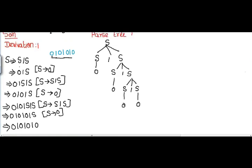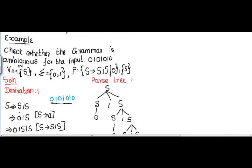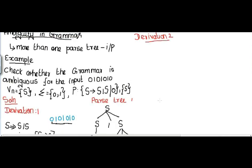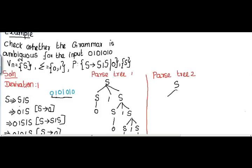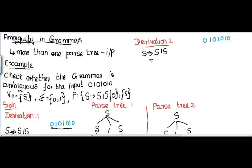Now let me try derivation 2 using a different method, drawing its corresponding parse tree alongside. The input for this grammar is 0 1 0 1 0 1 0. I start with S. If I substitute S → 0, I cannot proceed further, so I use S → S1S. Instead of S I substitute S1S. Now I need the first character as 0. In the previous derivation I substituted S → 0, but there is one more possibility: I can substitute S → S1S.